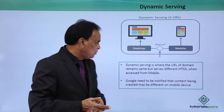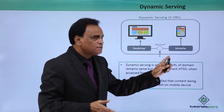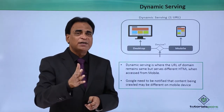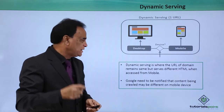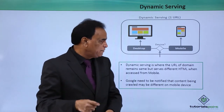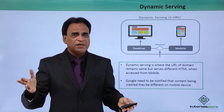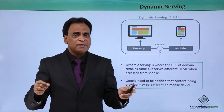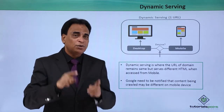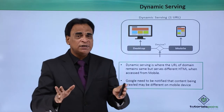The second configuration is dynamic serving. In dynamic serving, the URL of the domain remains the same but a different HTML page is served. For example, abc.com remains the same URL, but when viewed on a smartphone a different HTML page is retrieved. Google needs to be notified that the content being crawled may be different on mobile devices. The domain remains the same but pages are different, while the same content exists — so you need to notify search engines, particularly Google, that the content remains the same on both pages.